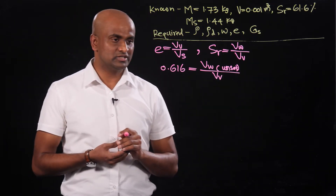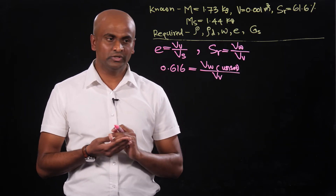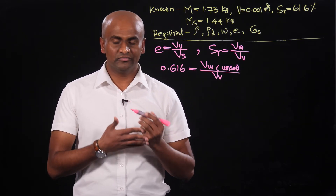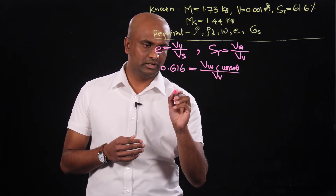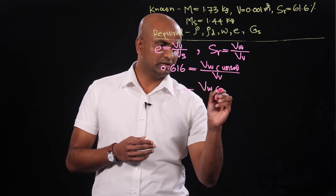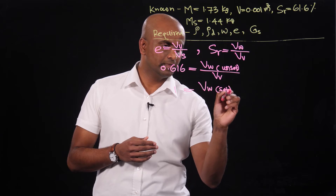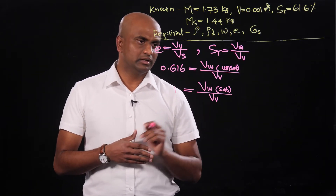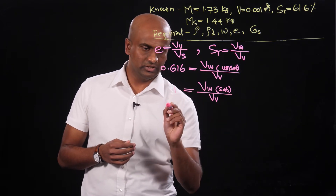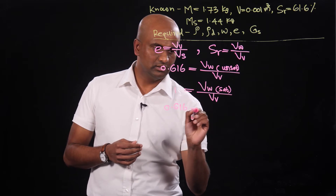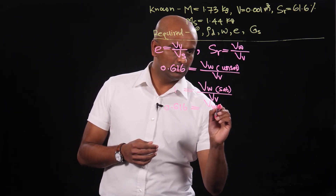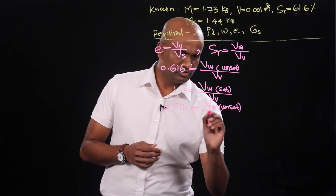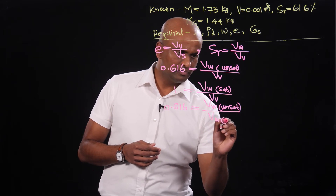We can use the fully saturated condition, where degree of saturation equals 1, meaning the total volume of voids is filled with water. When degree of saturation is 1, we write: 1 equals volume of water under saturated condition divided by volume of voids. The volume of voids does not change between the two cases, so combining the two equations: 0.616 equals unsaturated water volume over saturated water volume, and volume of water saturated equals volume of voids.